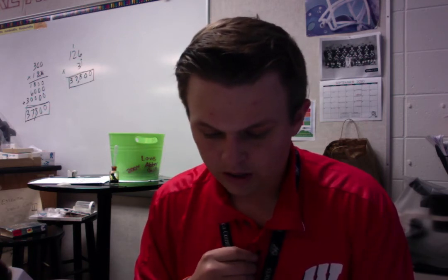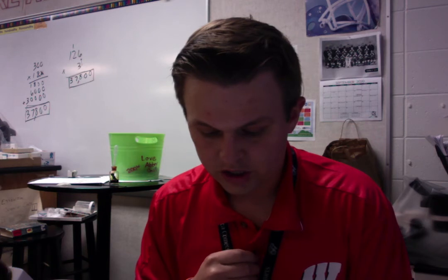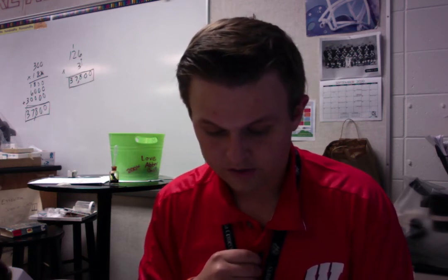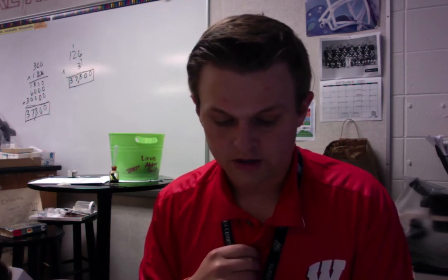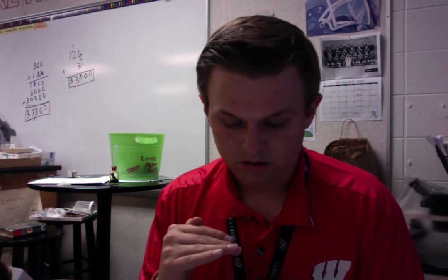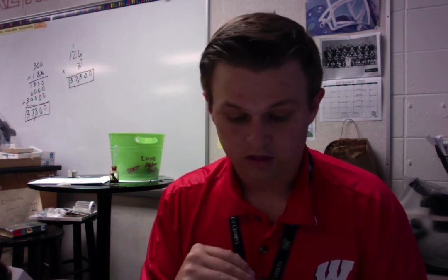Moving on to thinking critically. Number six is compare: name the organelle that has a job similar to each of these objects — railroad, cabinets, post office, and electric company. You could say: the blank is similar to a railroad. The blank is similar to cabinets. The blank is similar to a post office. And the blank is similar to the electric company. Answer each in complete sentences.